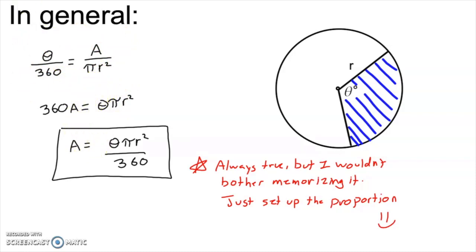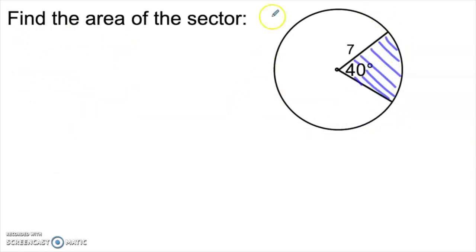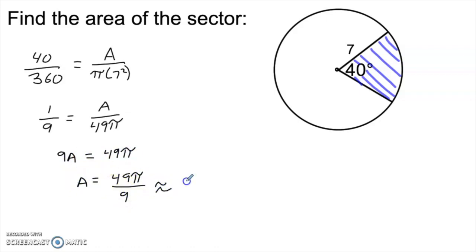Let's take a look at another example, solving for the area first. Here we have a circle with a radius of 7 and a central angle of 40 degrees. We know that 40 over 360 has to be the same ratio as the area of our sector to the area of the entire circle, pi times the radius squared. 40 over 360 simplifies to 1 over 9, cross multiplying then I get 9A equal to 49 pi and A is 49 pi over 9. That's an exact answer. If you need to round it, it ends up being approximately 17.104.